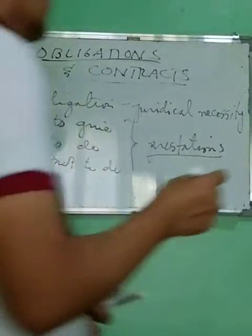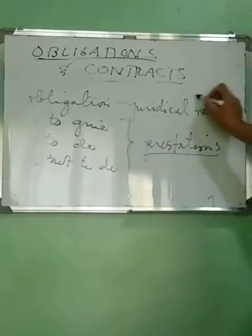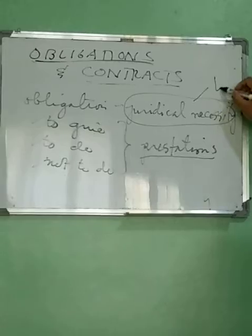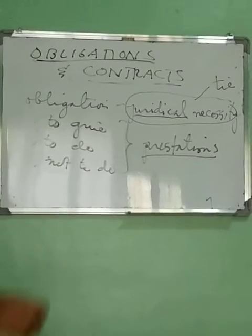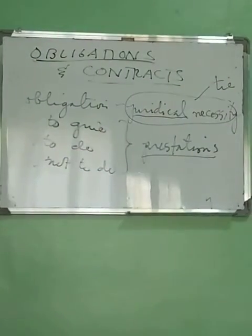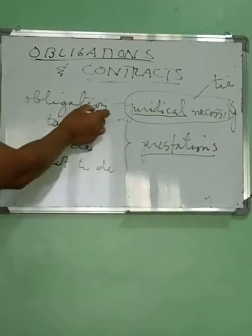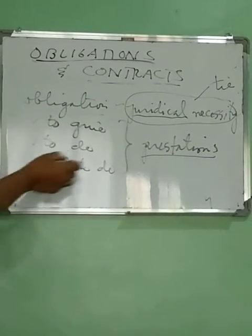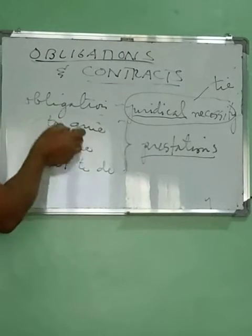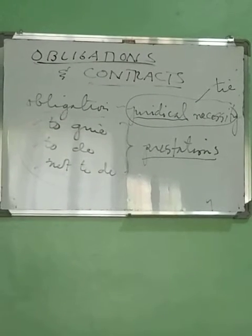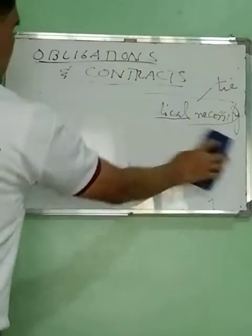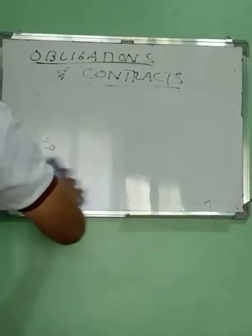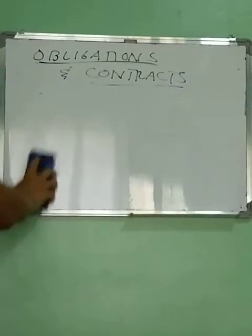When we talk of a juridical necessity, there is a tie. Juridical meaning you bound yourself to somebody or to someone to comply with a certain obligation or a certain duty, and that obligation may consist in any of these prestations. I will be giving you a video lecture that is more at length in the discussion of obligations and contracts.